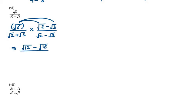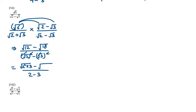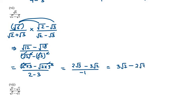In the denominator, the identity a plus b times a minus b applies, giving a square minus b square. Square and under root cancel on both sides. So the denominator gives under root 2 squared minus under root 3 squared, which is 2 minus 3. In the numerator, under root 12 is 2 squared into 3, and under root 18 is 2 into 3 squared. Square and under root cancel, giving 2 under root 3 minus 3 under root 2 over minus 1. So the answer becomes 3 under root 2 minus 2 under root 3.